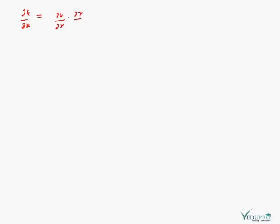Then by the property of total partial differentiation and composite variable functions, the value of ∂u/∂x will be: ∂u/∂r · ∂r/∂x + ∂u/∂s · ∂s/∂x + ∂u/∂t · ∂t/∂x. Since there are 3 variables, our partial differentiation will go up to 3 terms.